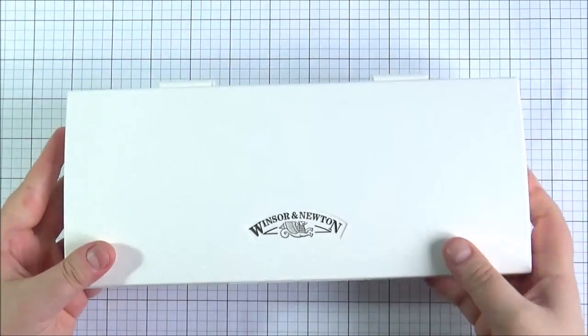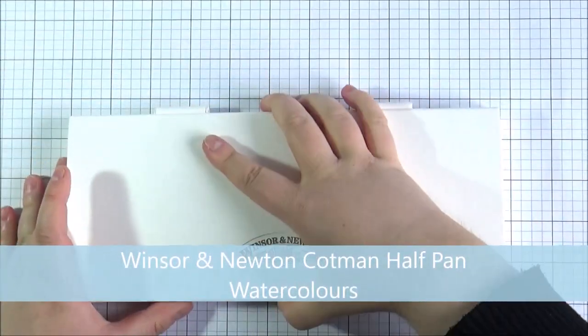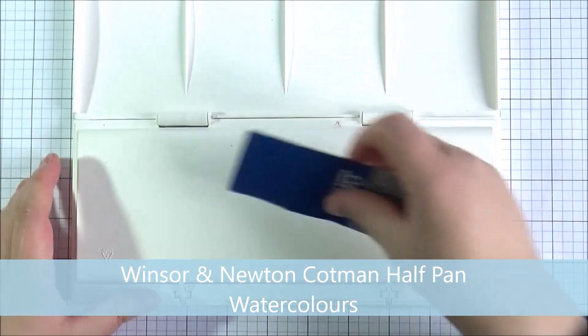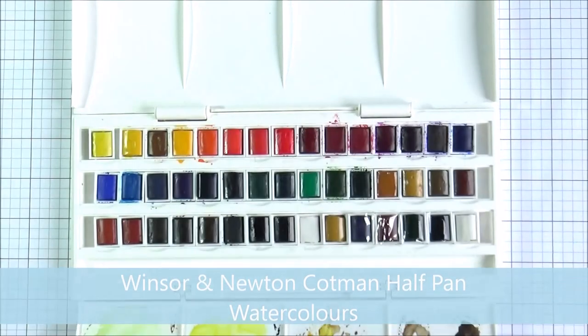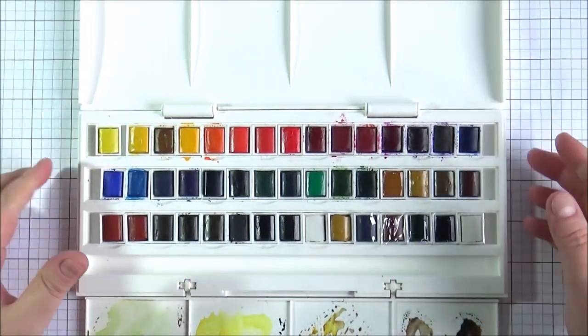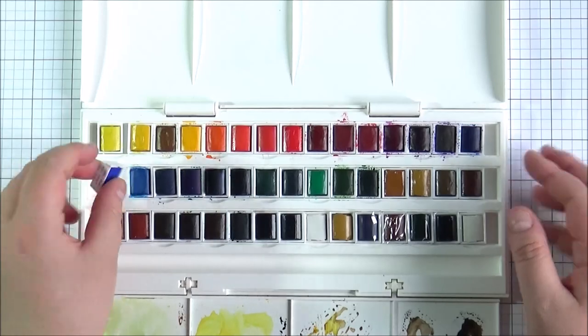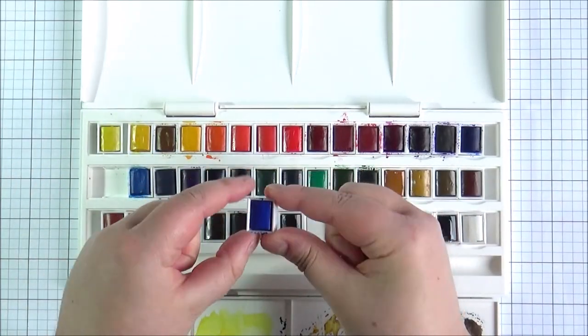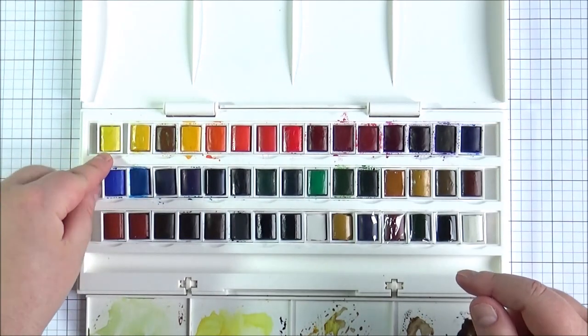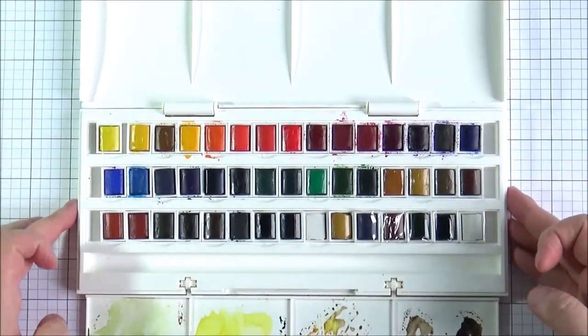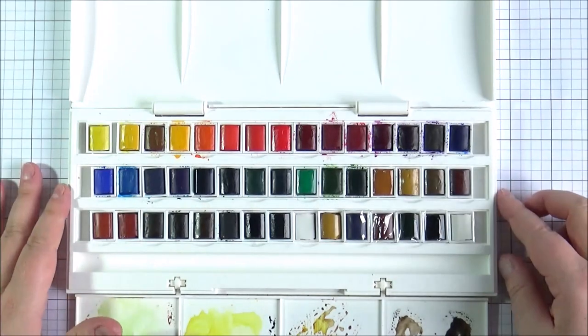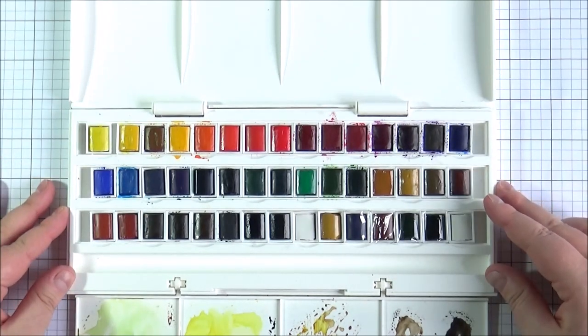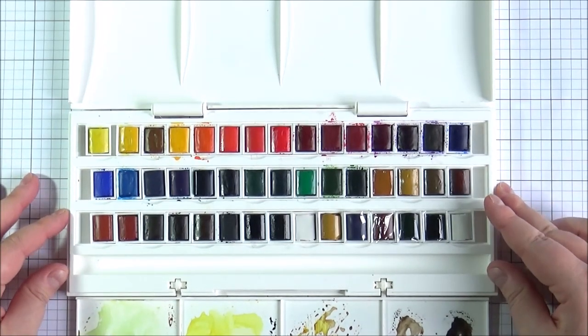Next up is some kind of traditional watercolours. These are the Winsor and Newton Cotman half pan watercolours. I really really like these. They're a little bit less quality than the artist grade although to be honest not that much difference. You just probably need a little bit more of the colour to actually get the intensity of the pigment that you want but I really like these because they come in a nice compact case. As you can see you get loads of different colours and this was a really good price point on this set as well.